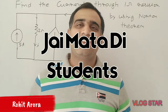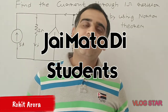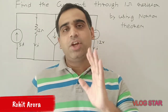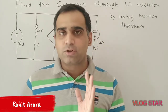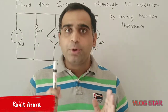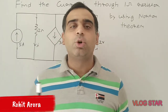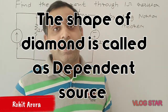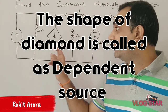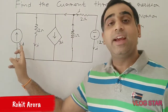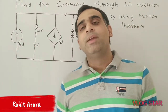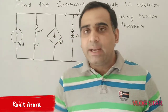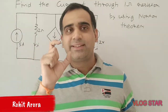Students, today's numerical is based on Norton's theorem. In this numerical I will take a dependent and independent source. How do you judge the dependent and independent source? The shape of a diamond is called a dependent source, and the circular shape is called an independent source.